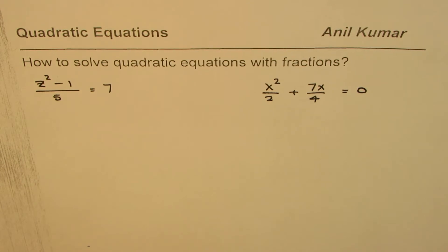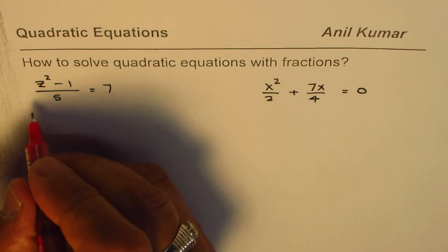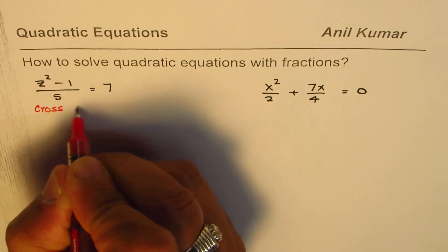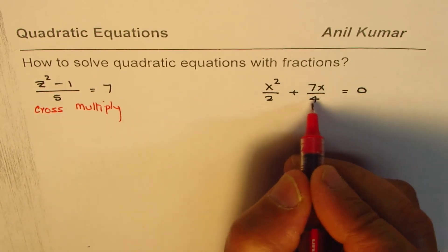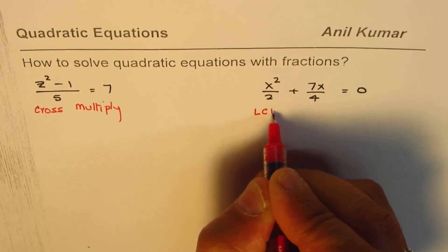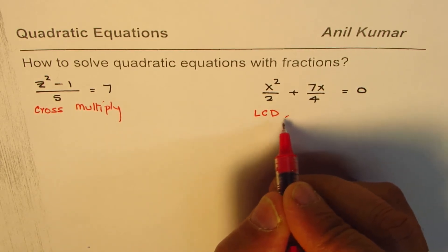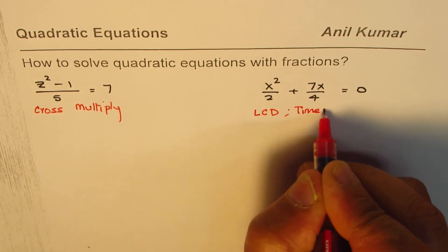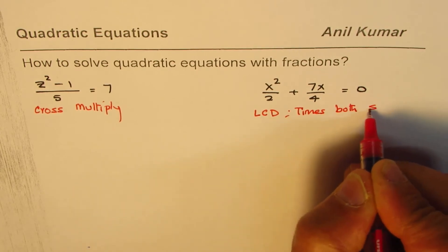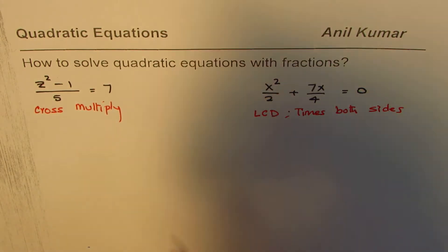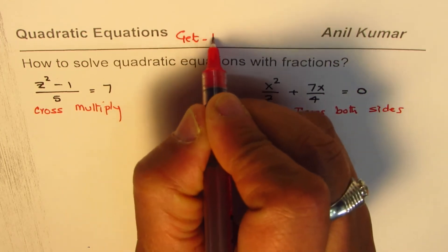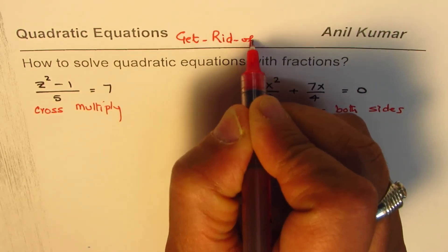Now the strategy is kind of similar for both. Let me name my strategies. This one I'll call cross multiply. And here we'll multiply by common denominator. So we look for lowest common denominator and then times both sides by lowest common denominator. So that's the idea.